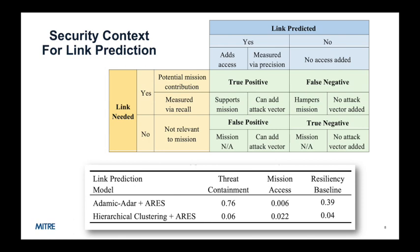A true negative is not predicted to be needed and is not in fact needed. Thus, no contribution to mission value is possible since there is no mission need. No additional attack vector is added in that case. A false negative is not predicted to be needed but is in fact needed. In this case, mission value is reduced and no additional attack vector is added.